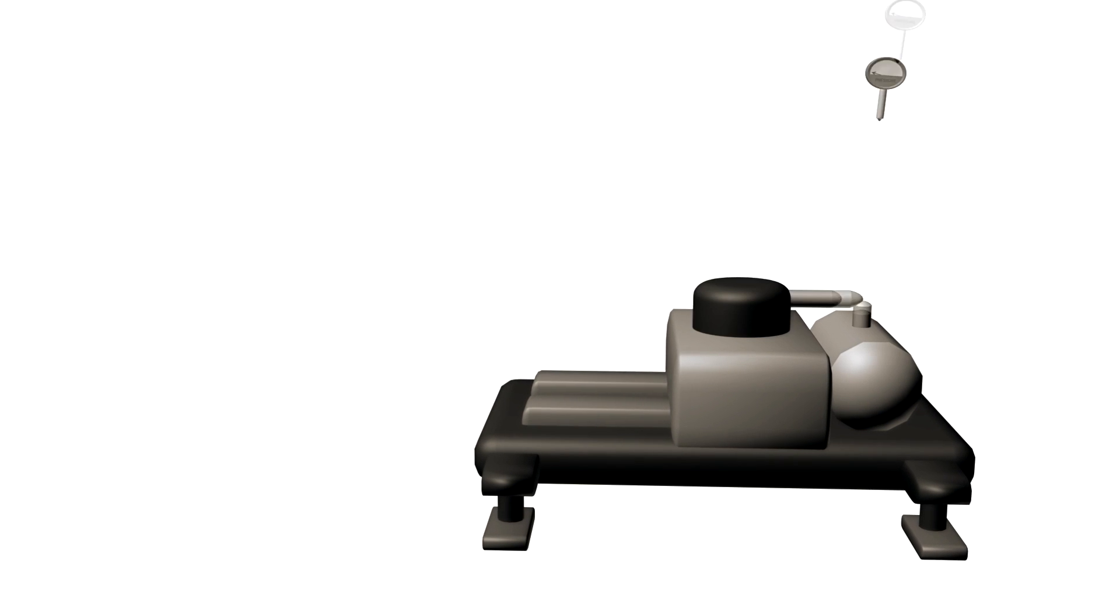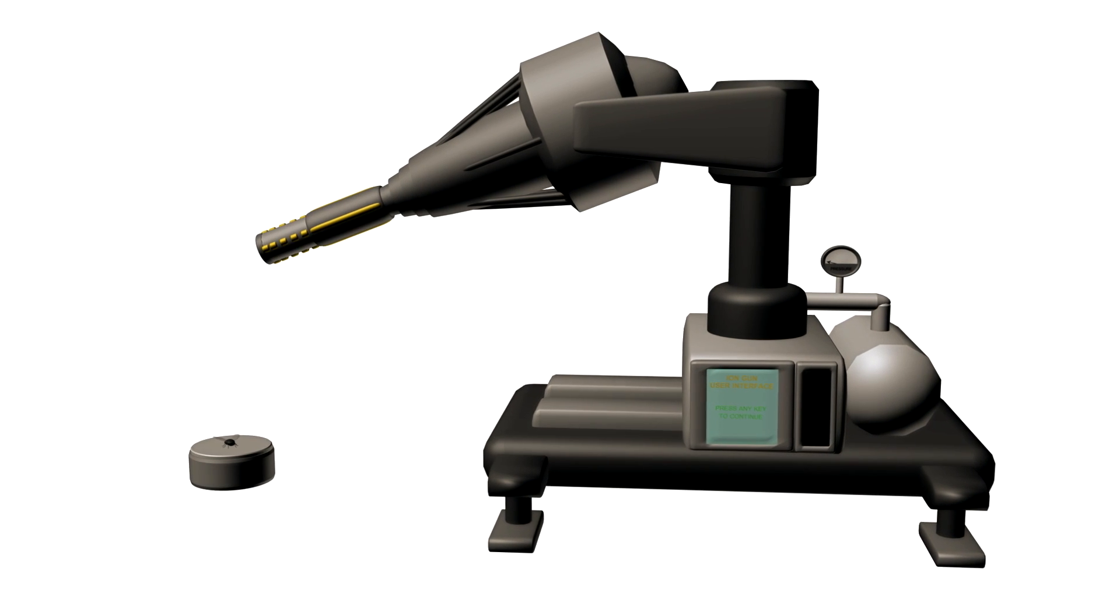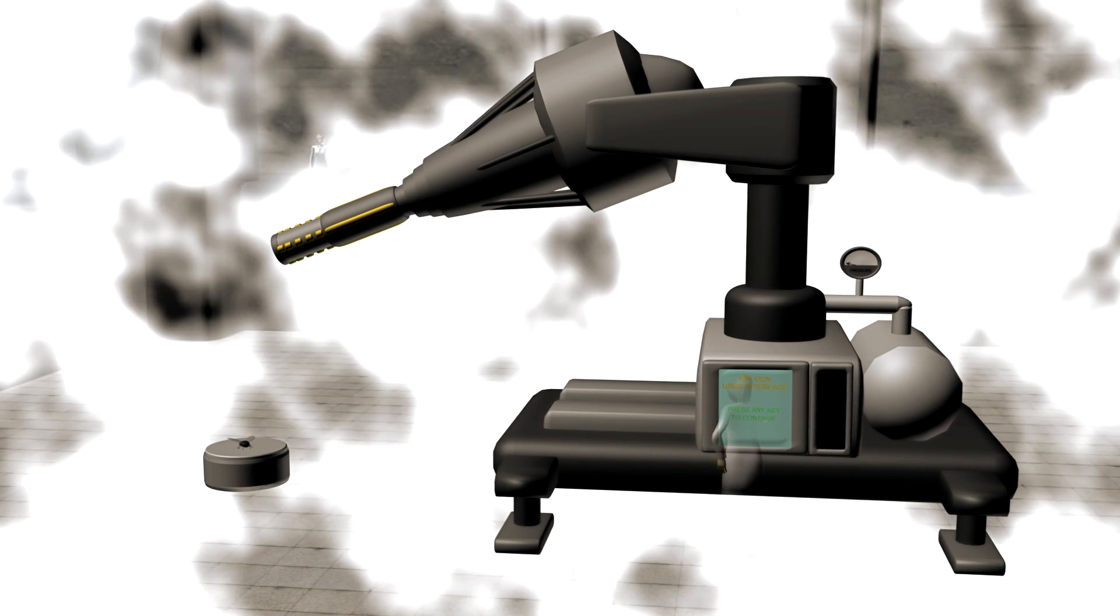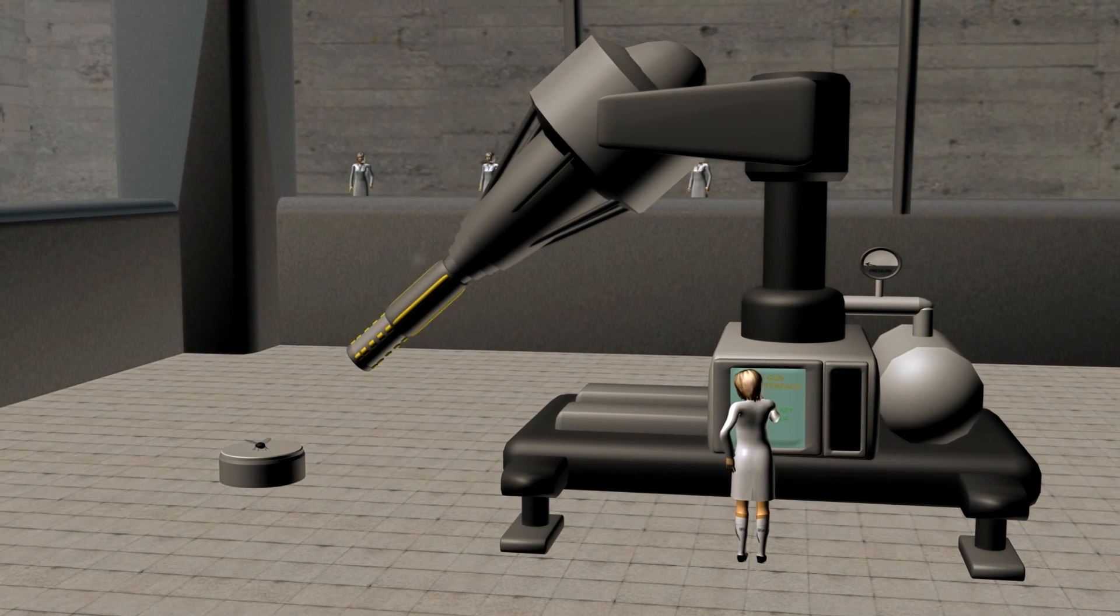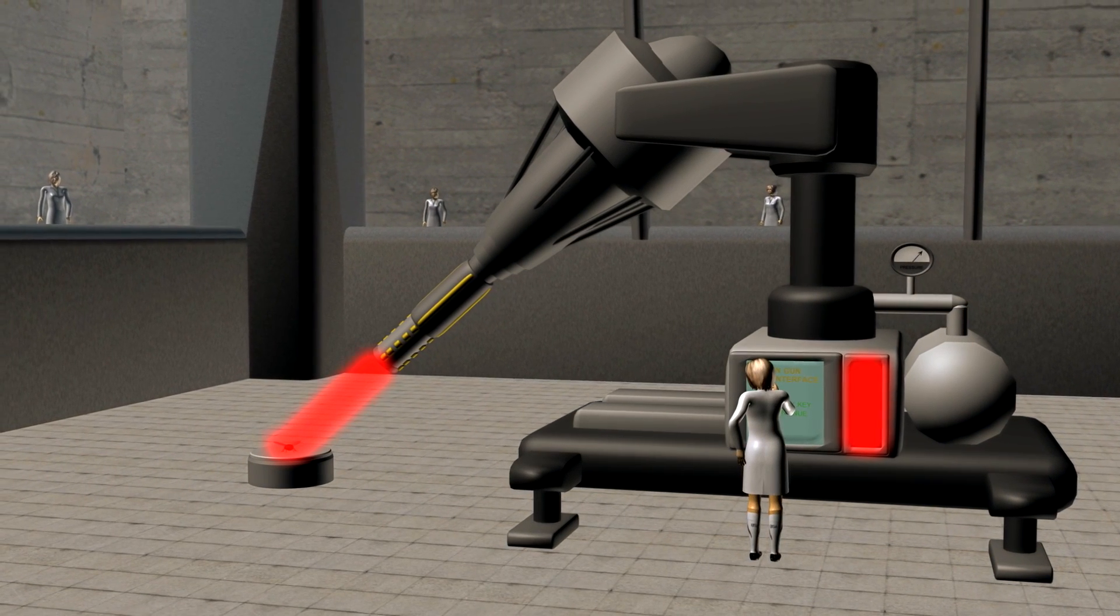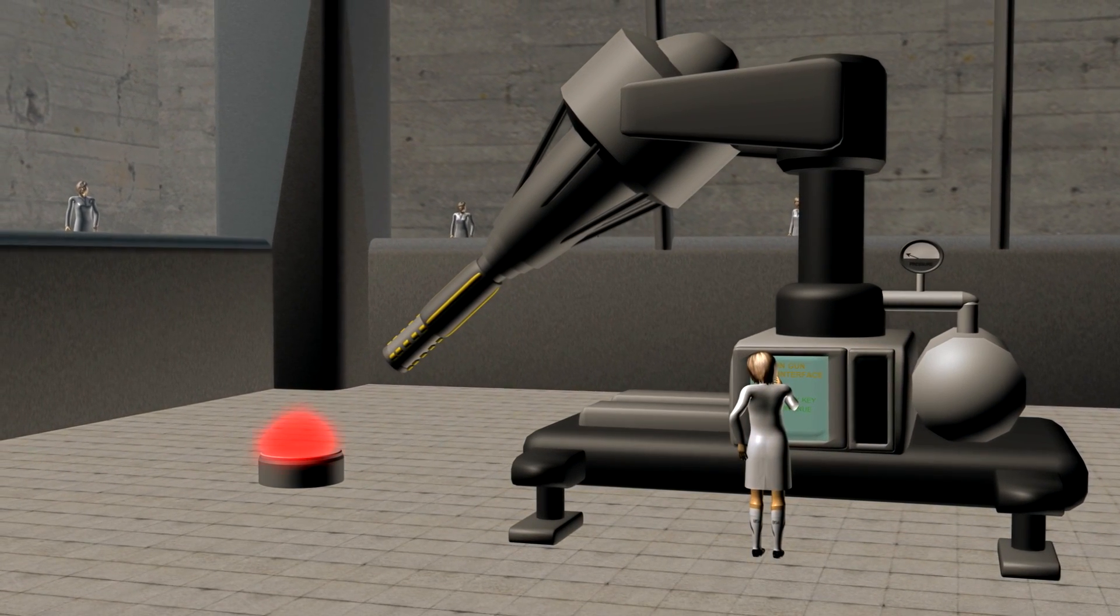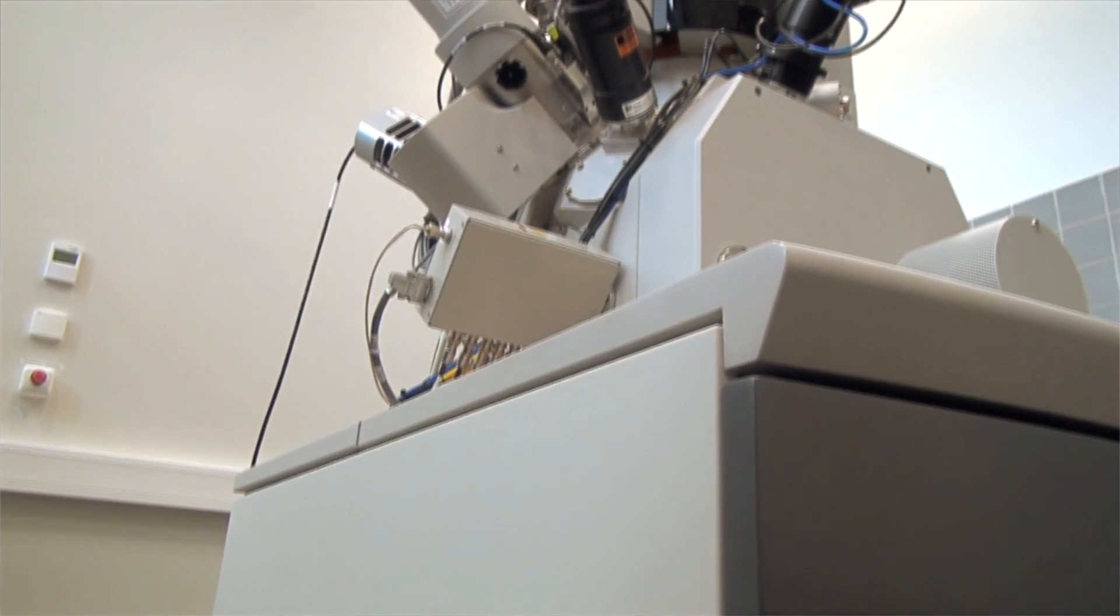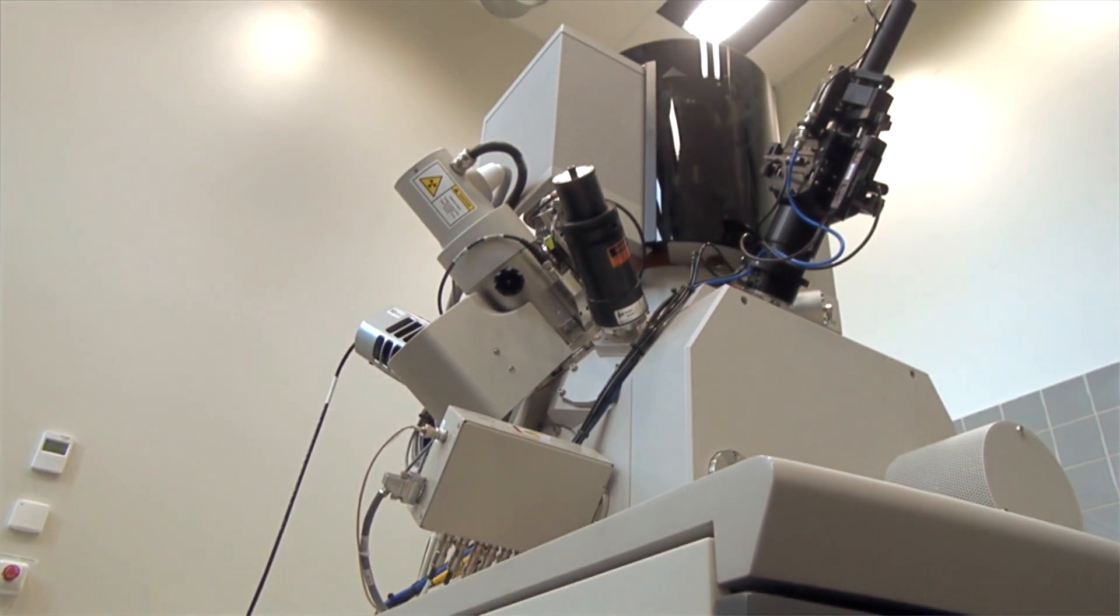When someone mentions an ion gun, you're probably thinking of a futuristic weapon from a science fiction movie. However, the truth is that the leading scientists of our world have been using this technology already in the decade. Now let's find out what we can do with an ion gun under the scanning electron microscope.